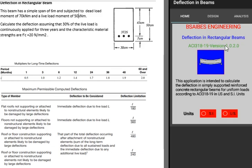Deflection in Rectangular Beams According to ACI Code. This application is intended to calculate the deflection in simply supported reinforced concrete rectangular beams for uniform loads according to ACI code in US and SI units.